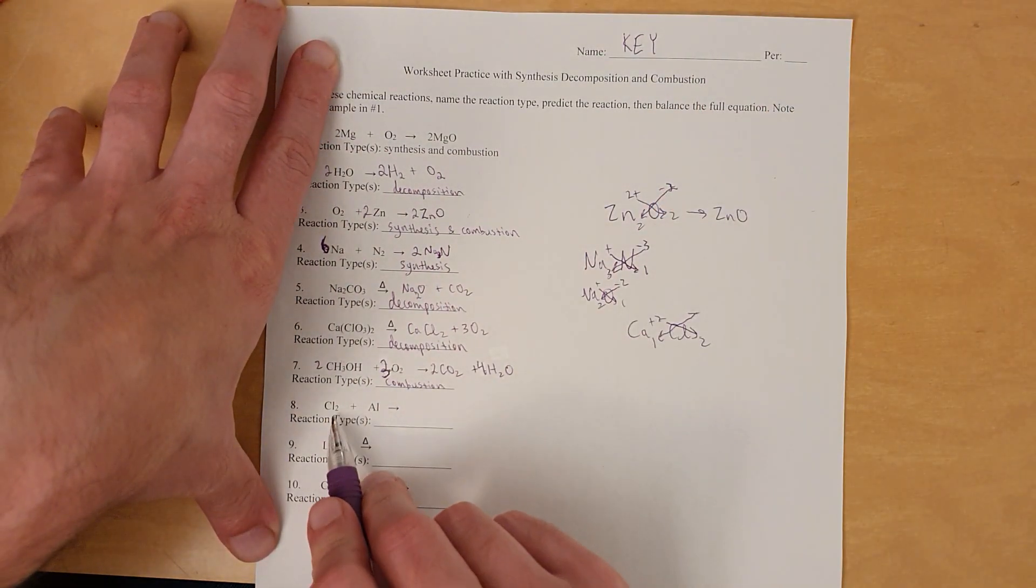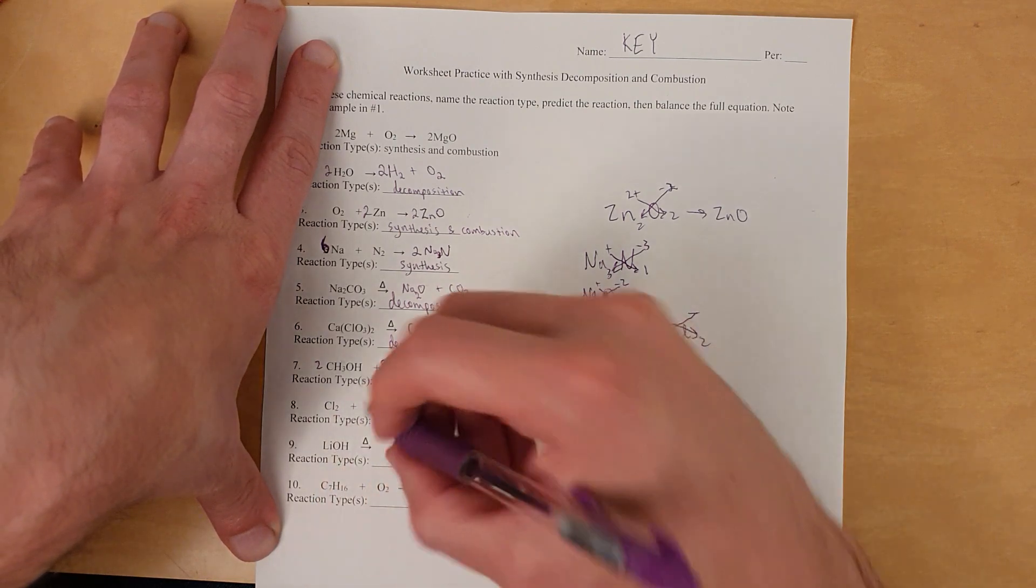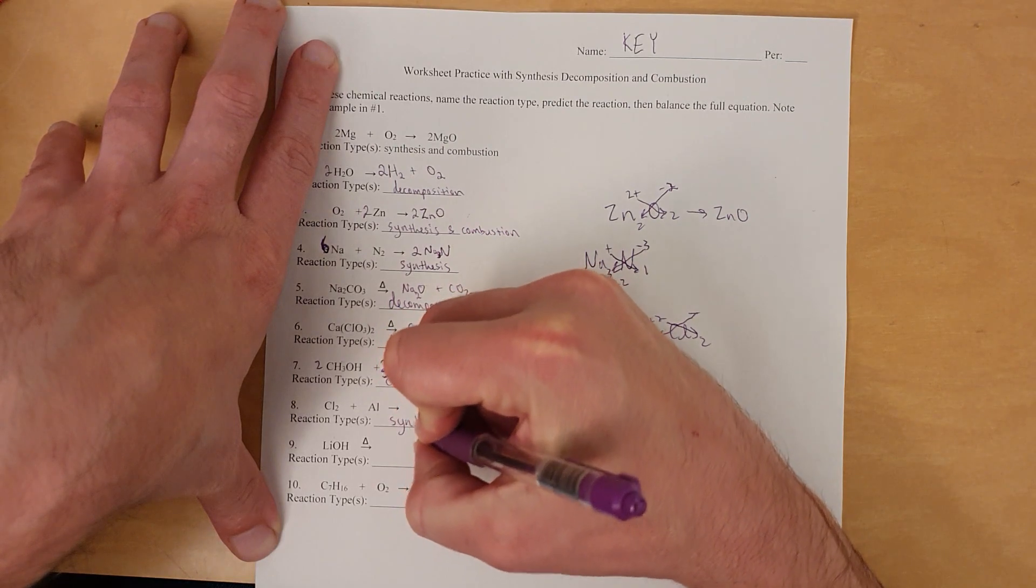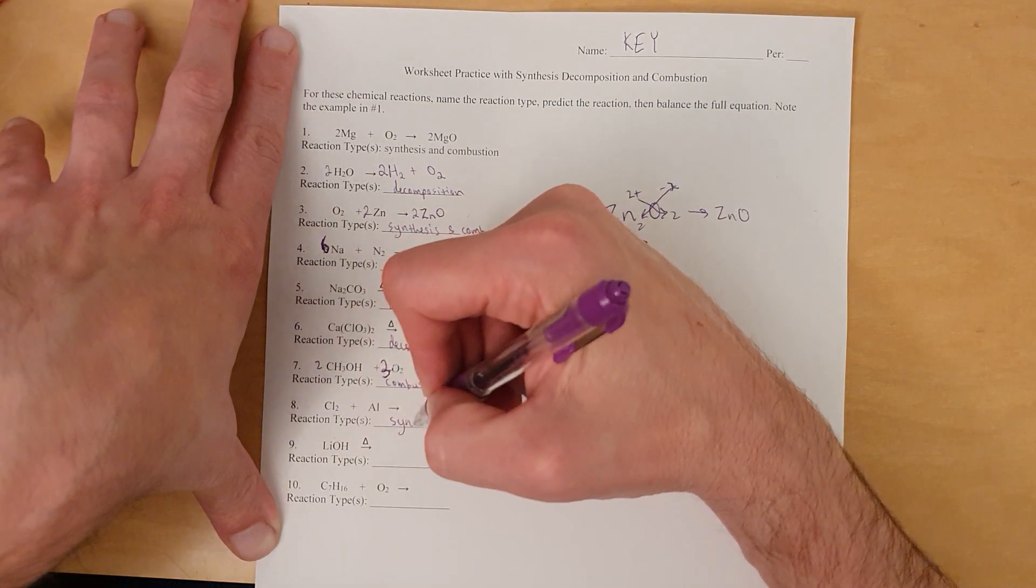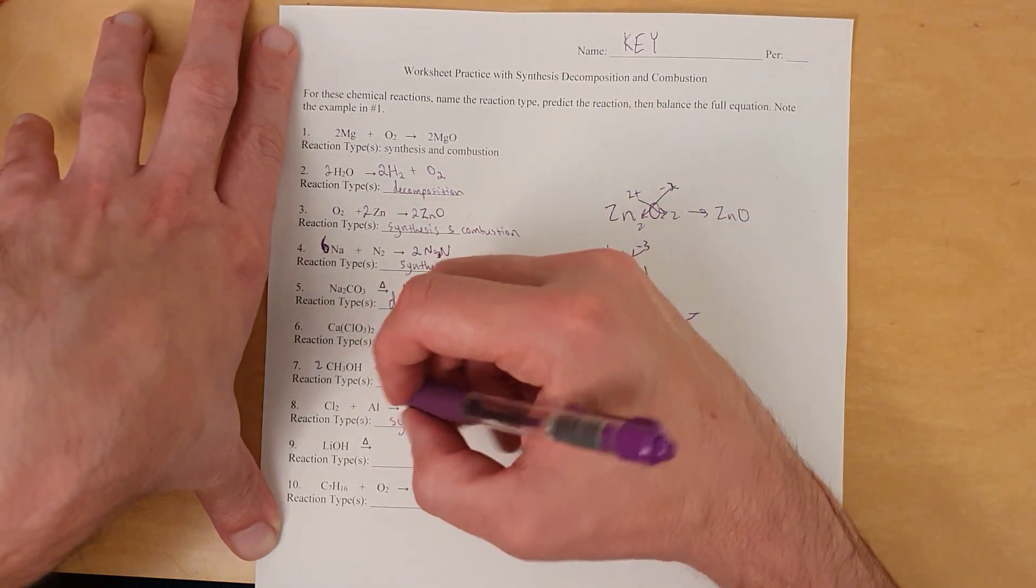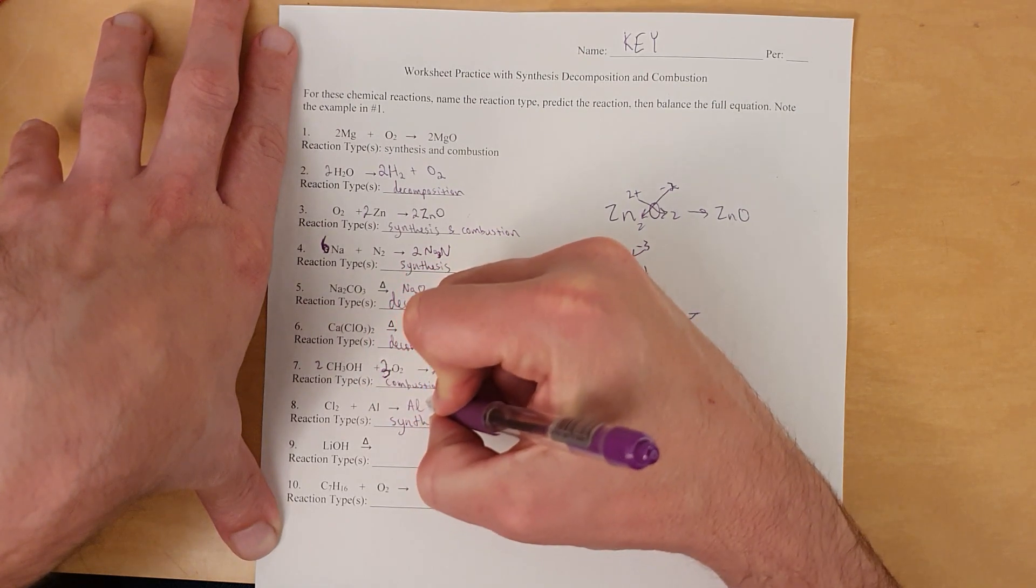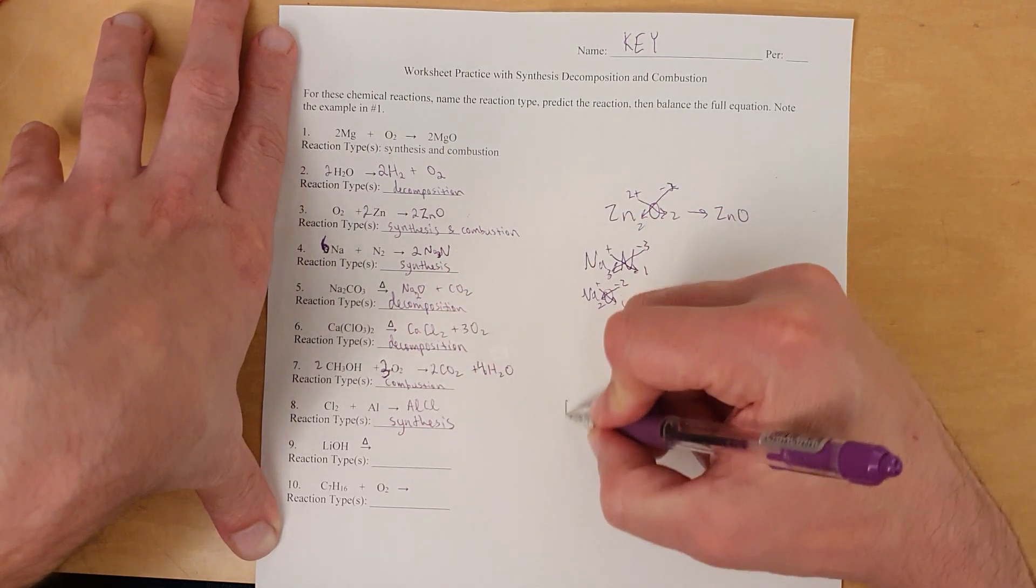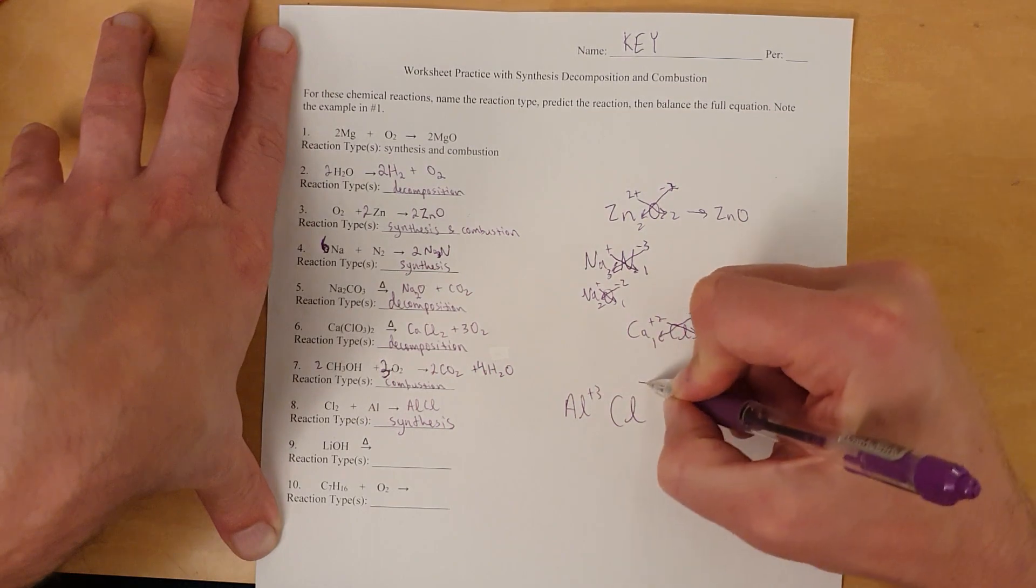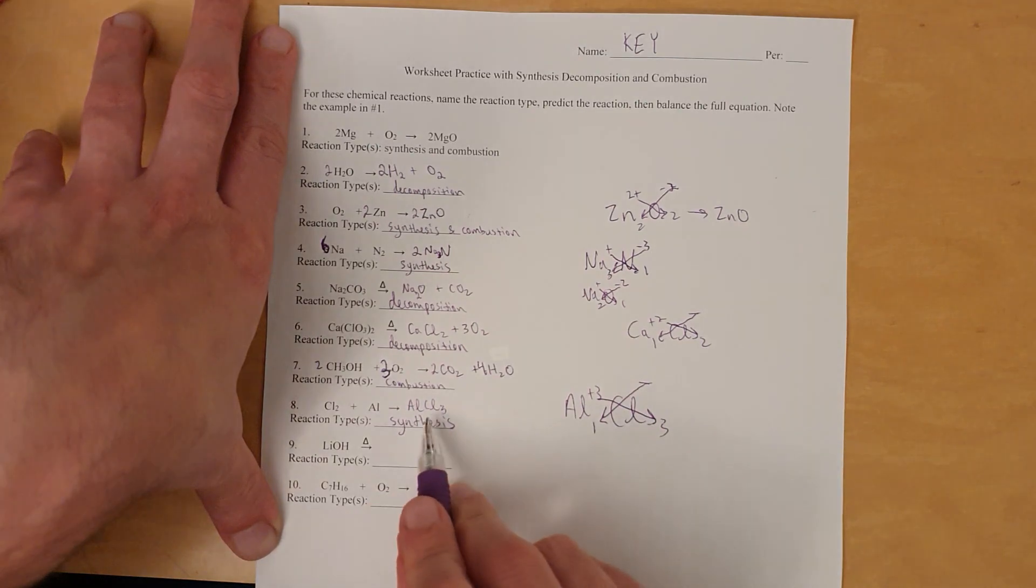Next. Reaction type. 2 pure elements will react to make a compound. So, when you have 2 pure elements reacting, that's a synthesis. But unlike this synthesis and combustion, neither one's oxygen, so it's not a combustion. All right. So, what we have now, aluminum plus chlorine makes aluminum and chlorine, right? Because the cation goes first. Now, aluminum is a plus 3. Chlorine is a minus 1. So, your former should have 1 aluminum and 3 chlorines. So, we've got to fix the former to be correct. So, aluminum, chlorine.